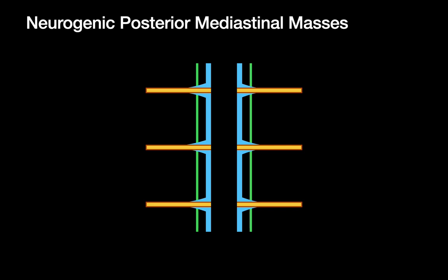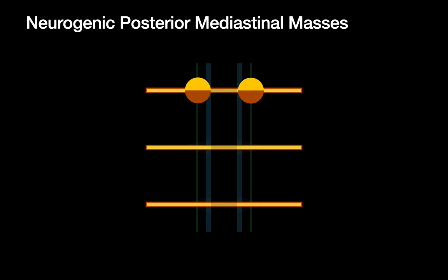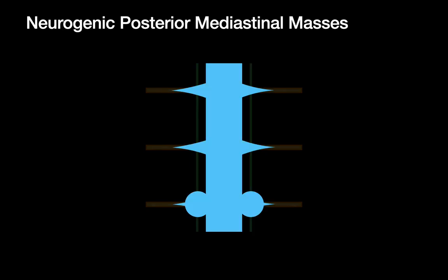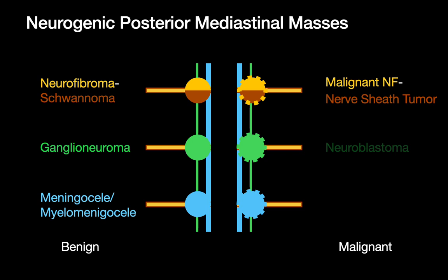For the most part, we don't encounter posterior mediastinal masses of spinal cord origin, but we do encounter ones of spinal nerve and nerve sheath origin, ones of sympathetic chain origin, and ones of thecal sac origin. Both benign and malignant versions can occur. Benign neurogenic posterior mediastinal masses arising from the spinal nerves and nerve sheaths include neurofibromas and schwannomas. Ganglion neuromas may arise from the sympathetic chain, and meningoceles and myelomeningoceles can arise from the thecal sac.